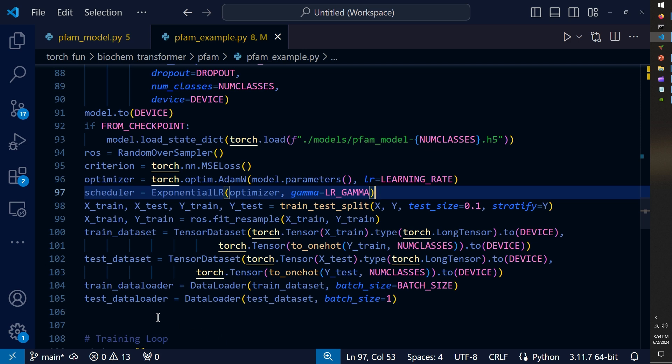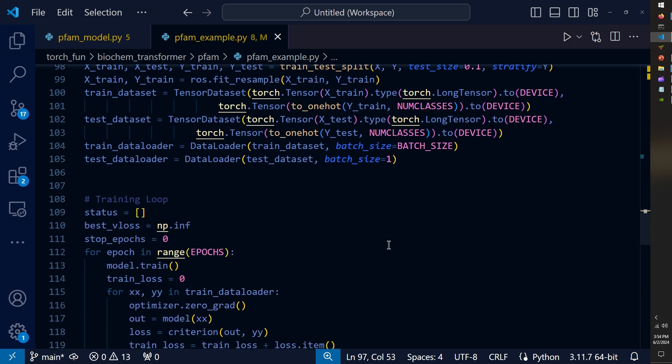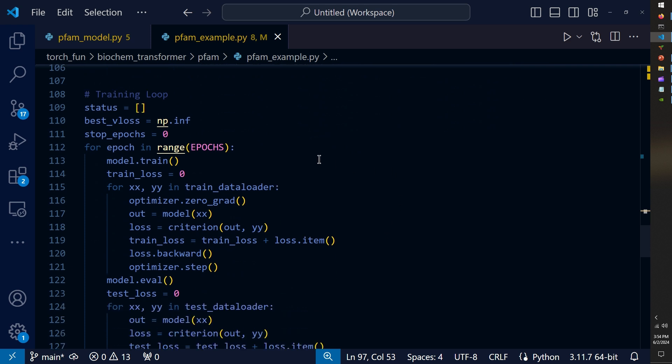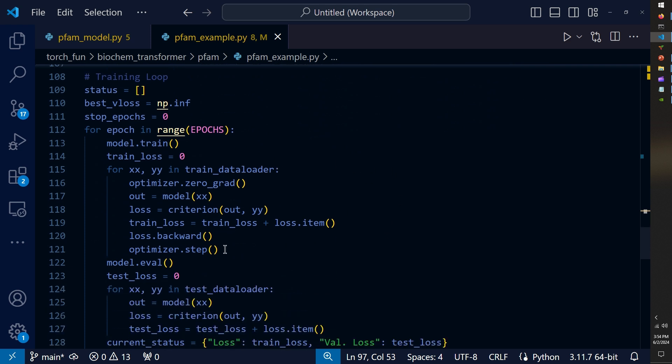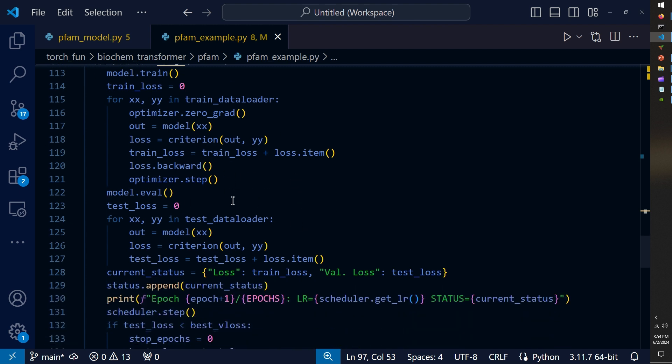After constructing the training set and the test set, I move directly into training where I loop over the epochs for the training data to perform the training. Then I switch to evaluation and loop over our test data so that I can collect validation loss at each training step.